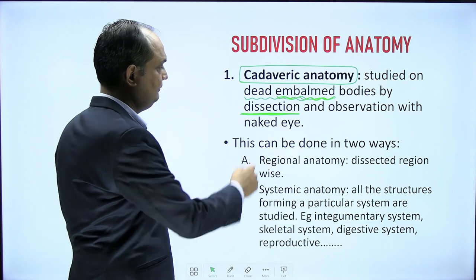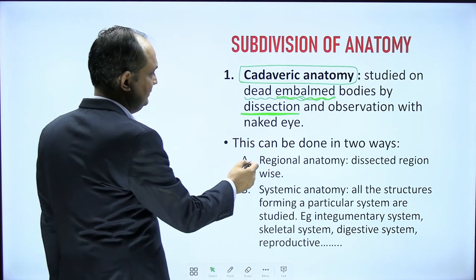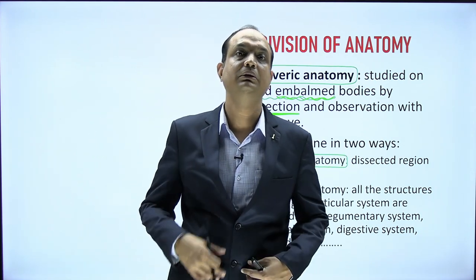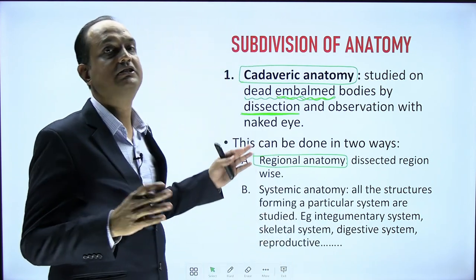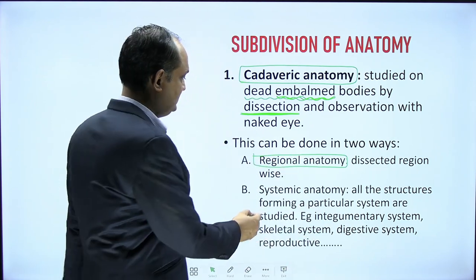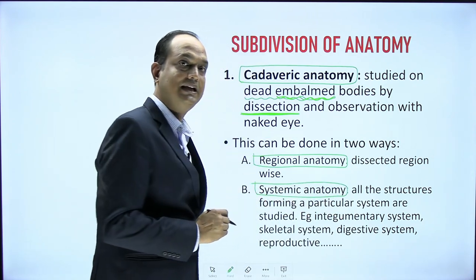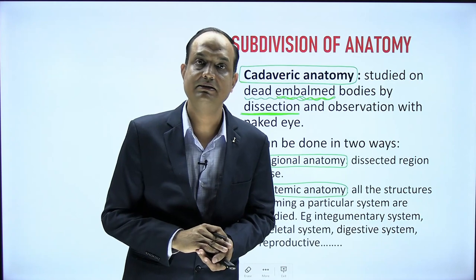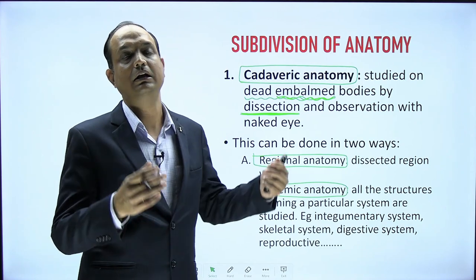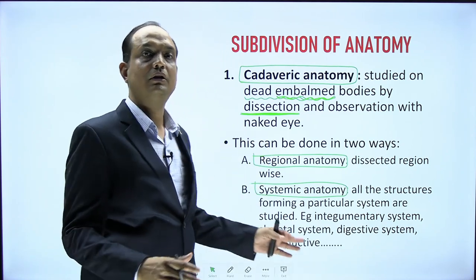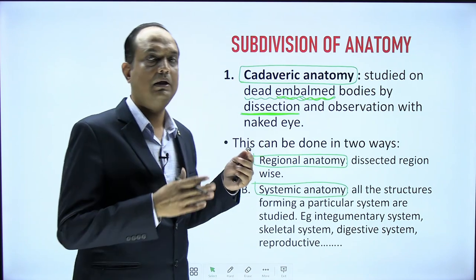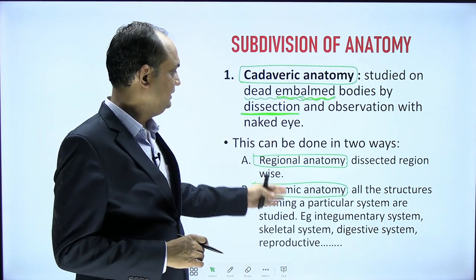Cadaveric anatomy is learned with the naked eye and can be divided into two approaches. First is regional anatomy, where you divide the cadaver by regions such as upper limb, lower limb, abdomen, thorax, and head and neck. Second is systemic anatomy, where you dissect the cadaver system by system — for example, the integumentary system, gastrointestinal tract, reproductive system, or digestive system.